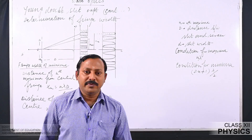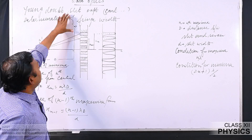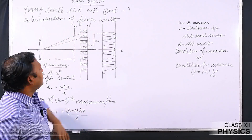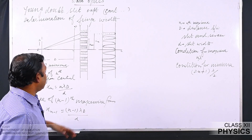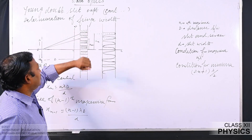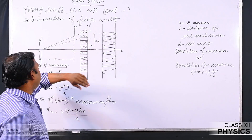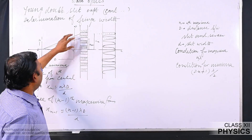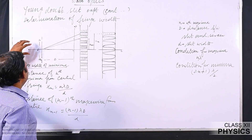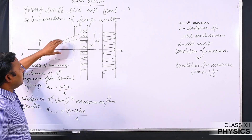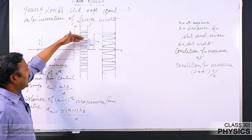Hello students. We are dealing with the chapter wave optics and we dealt with the topic Young's double slit experiment. In Young's double slit experiment we calculated some of the parameters involved, such as the distance of nth fringe from the central fringe, which corresponds to maximum as well as minimum. We also tried to learn the formation of fringes when two coherent sources superimpose with each other, due to which we get bright and dark bands.